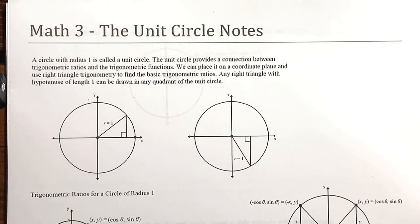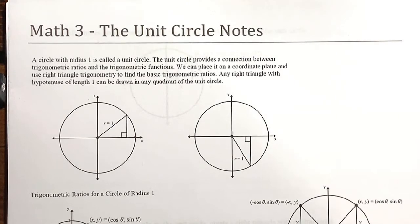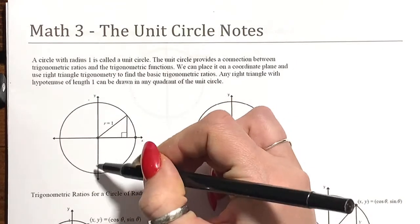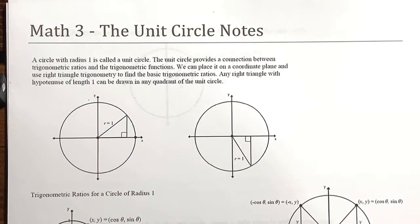The unit circle is just a circle with a radius of one unit, so we call it the unit circle. It provides a connection between the trig ratios that we learned — like SOHCAHTOA, where sine is opposite over hypotenuse, tangent is opposite over adjacent, cosine is adjacent over hypotenuse — and also the trig functions in general: sine, cosine, and tangent. We can place it on a coordinate plane with our x and y axes, and use our right triangle trigonometry from section 5.1 to find our basic trig ratios.